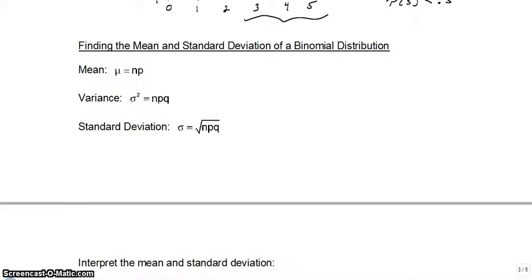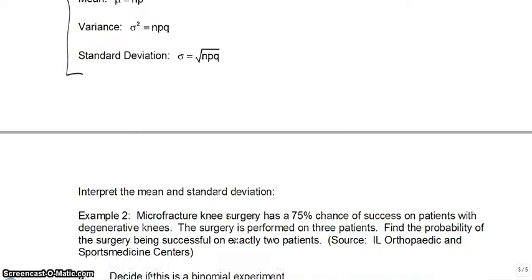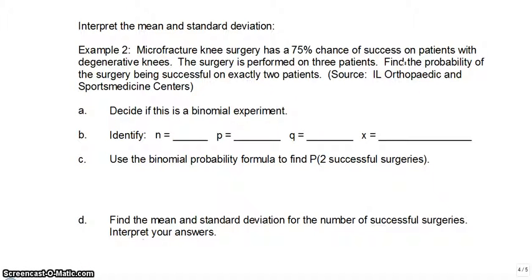Moving on — here are formulas to find the mean and standard deviation of a binomial distribution. You can still calculate these the way we've been doing with a probability distribution, but these formulas make calculations easier when you only have two outcomes: success and failure. All these formulas will be given to you — you don't have to memorize anything. Let's go through this example: microfracture knee surgery has a 75% chance of success on patients.